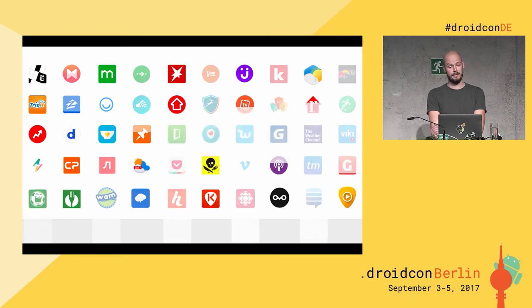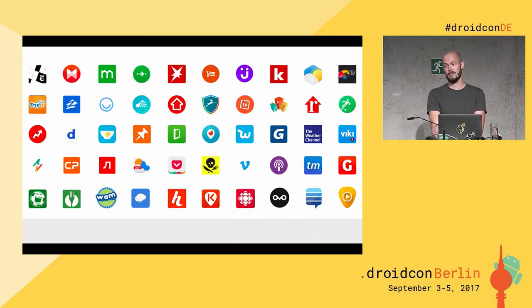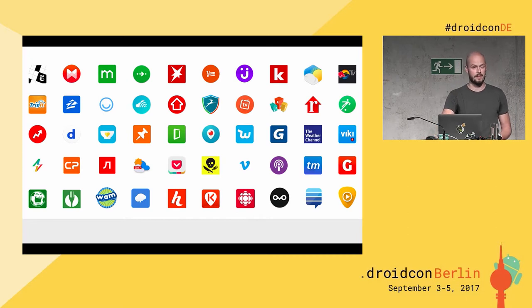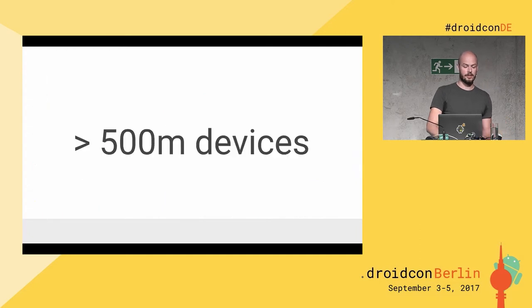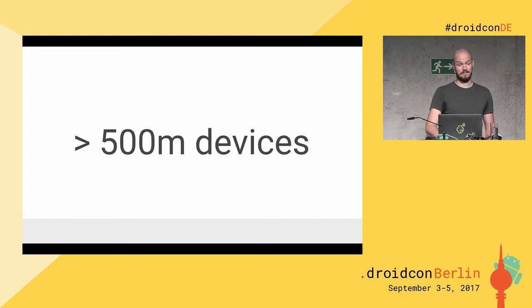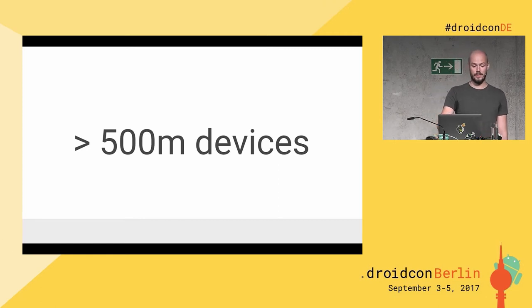We started with 50 early access partners from all different kinds of companies around the world, who achieved a lot with Instant Apps even with the early access SDK. The SDK is now generally available, and many more apps have been developed and are being tested. The last milestone we published was more than 500 million devices — more than half a billion devices that can use Android Instant Apps. That's quite a big user base for a feature that shipped just a couple of months ago.